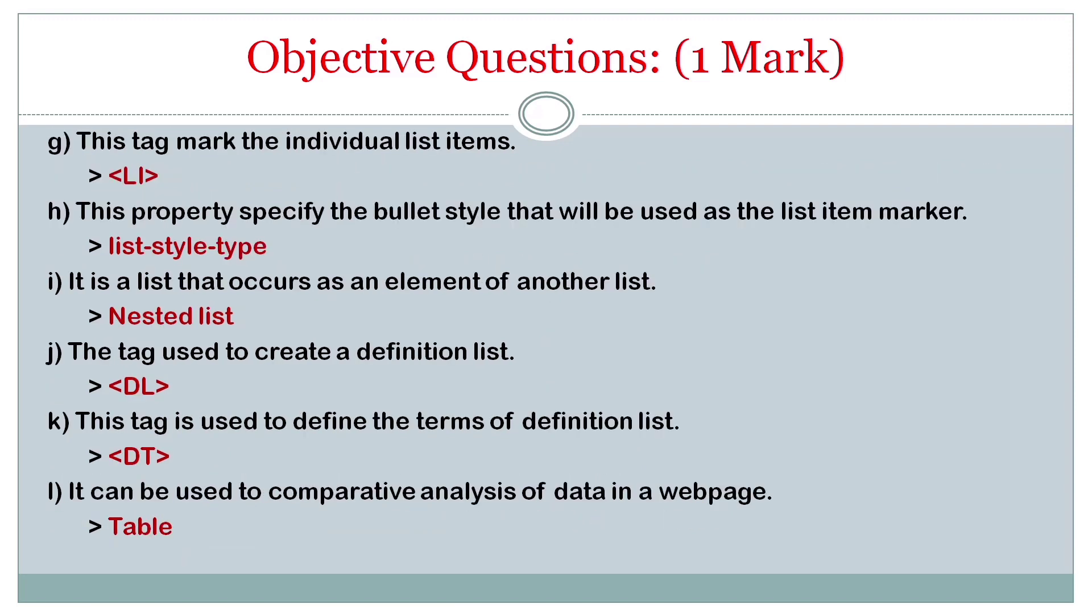This tag marks the individual list items - it is LI. This property specifies bullet style that will be used as list item marker - it is list-style-type property. It is a list that occurs as an element of another list - nested list.